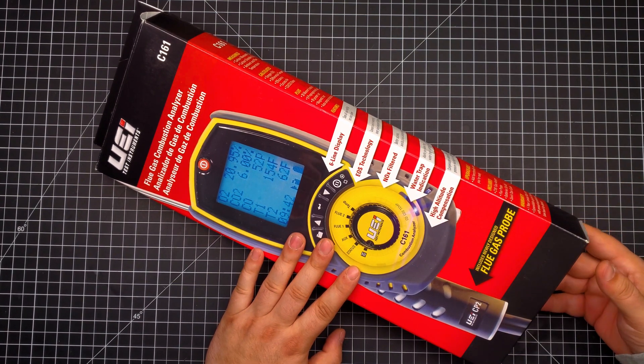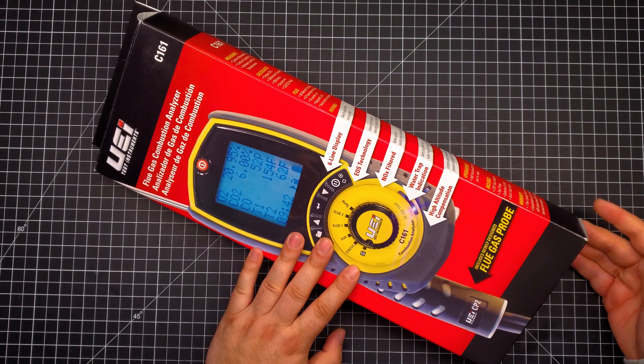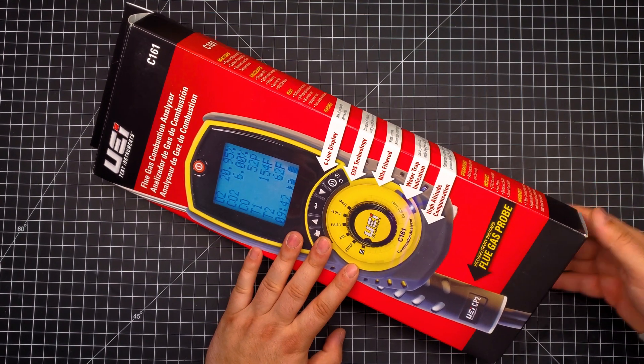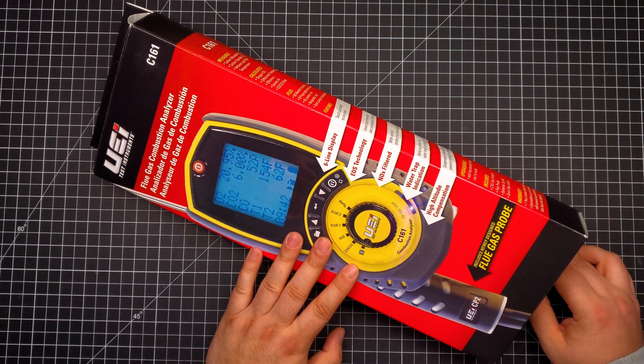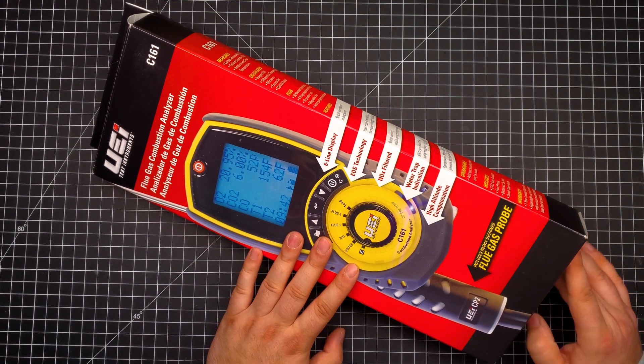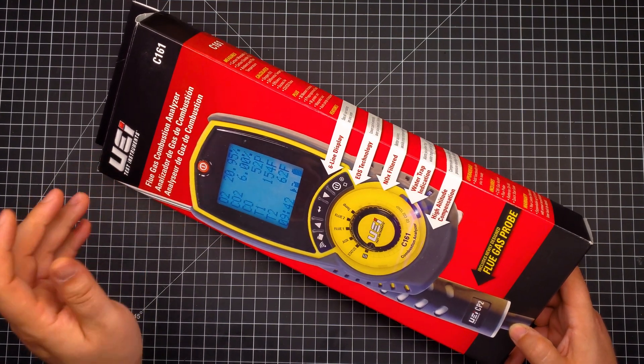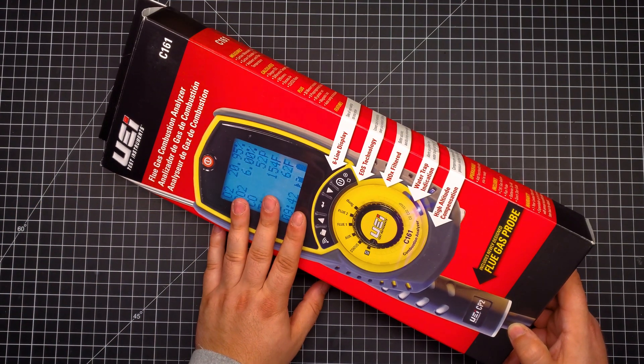Generally those sensors can last five or six years which is definitely something great. However, I think the NDIR sensor still has the best of both worlds because it doesn't require constant power to keep it stable when it's off.